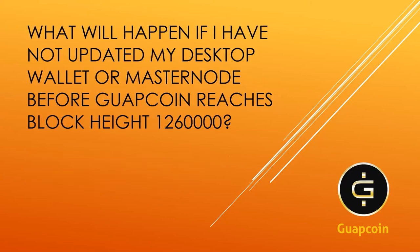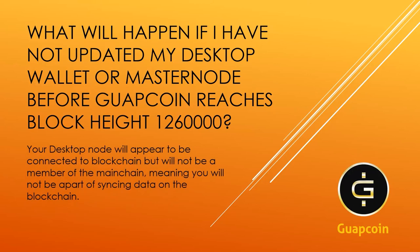Next question: What will happen if I have not updated my desktop wallet or masternode before GuapCoin reaches block height 1,260,000? The desktop node will appear to be connected to the blockchain but will not be a member of the main chain, meaning you will not be part of the syncing data. Rewards will still appear to come in, but you'll effectively be on your own forked blockchain.